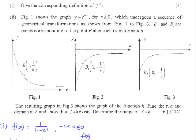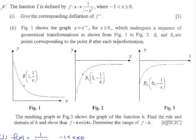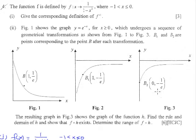Now let's take a look at the second part. Figure 1 shows the graph of y equals e to the power of negative x. It undergoes a series of transformations from figure 1 to figure 3, one transformation after another. The resulting graph in figure 3 shows the graph of a function h. So we're supposed to figure out what this function h is.